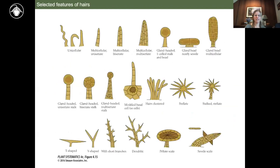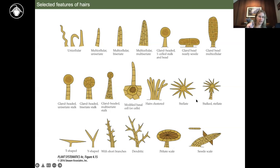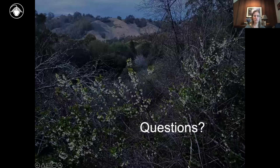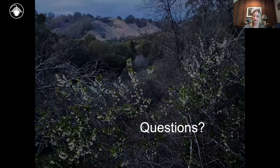The last thing to mention is that there is an enormous diversity of hair types. Hairs, glands — Malvaceae especially has wonderful star-shaped hairs. Once you get in there with your hand lens and really get to know a plant, or get it under a microscope, you can see this amazing world of great detail. With that, we can go to the chat — if you have any questions about vegetative morphology, we can take a few minutes there.